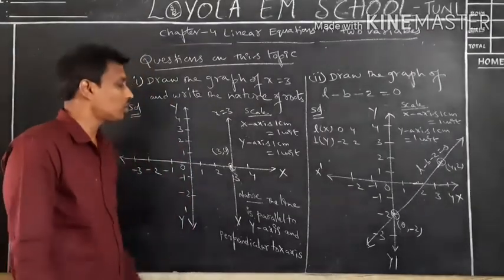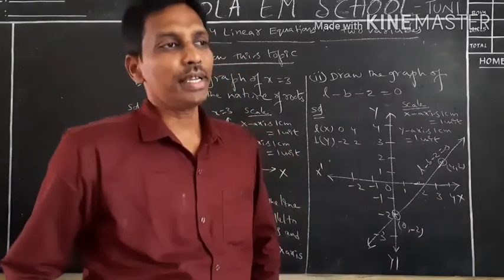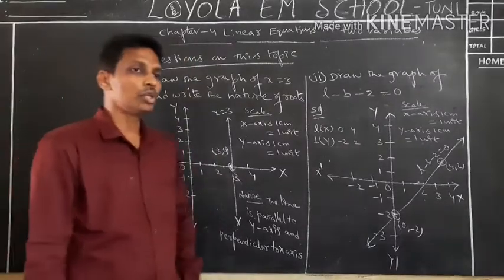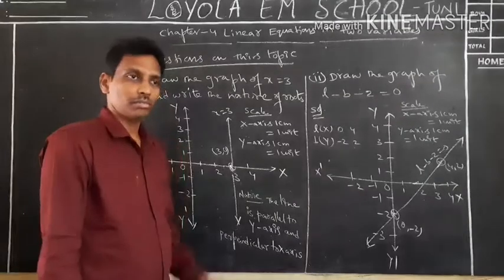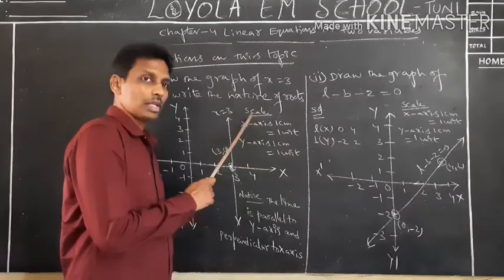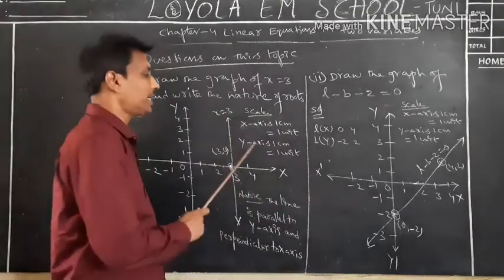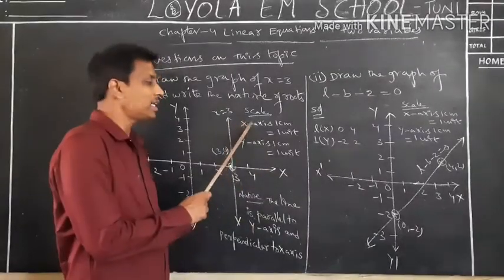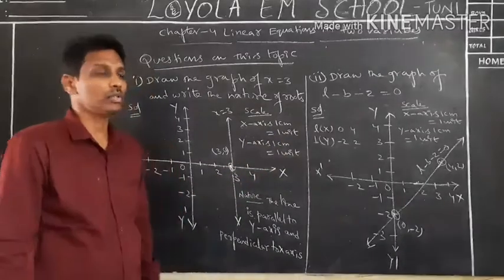Don't forget to write the scale at the top right corner for each and every graph problem. Write: on x-axis, 1 cm = 1 unit; on y-axis, 1 cm = 1 unit. Also, the solution is not complete just by drawing the diagram — the question also asks us to write the nature of the roots, which means writing our observations from the graph.